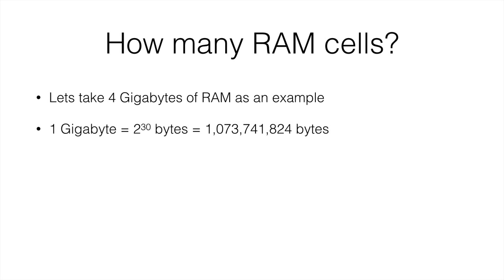One gigabyte is 2 to the power of 30 bytes, as we saw in our table. This is 1,073,741,824 bytes. We multiply that by 4 to get 4 gigabytes. And this is starting to be a pretty big number of bytes.